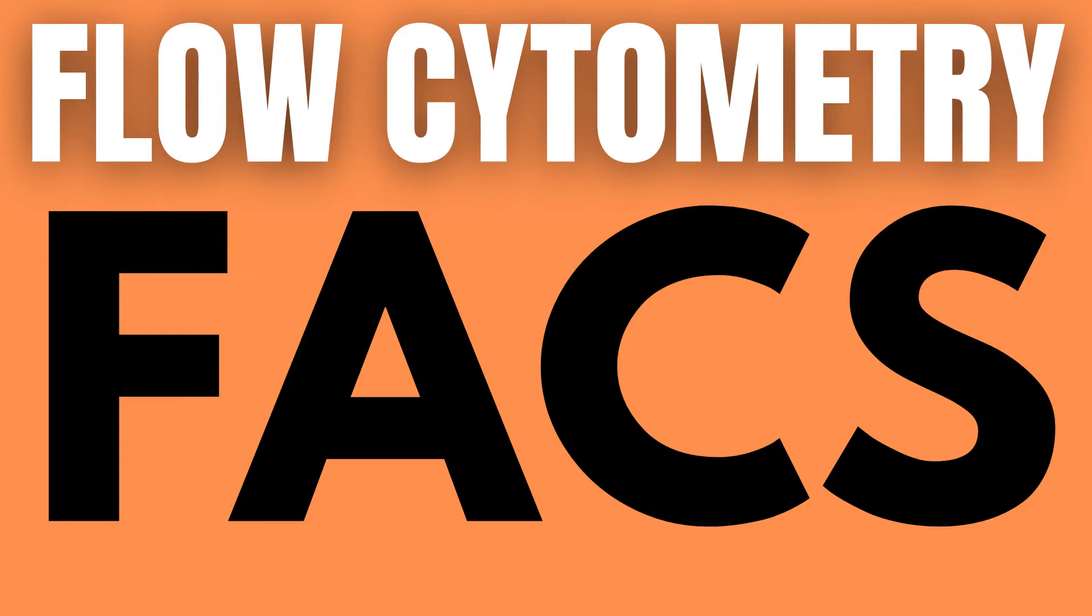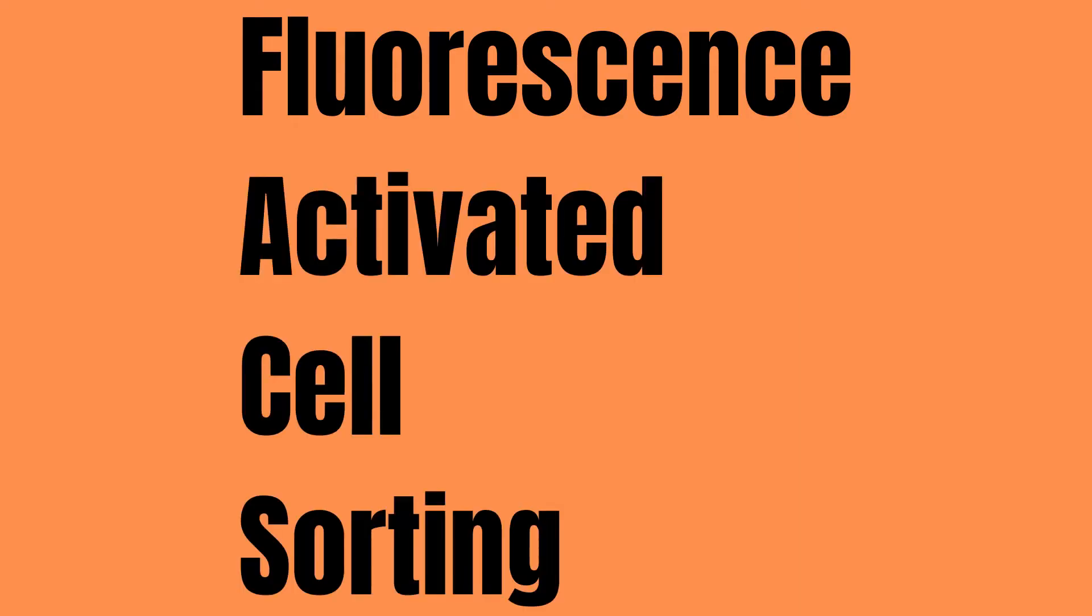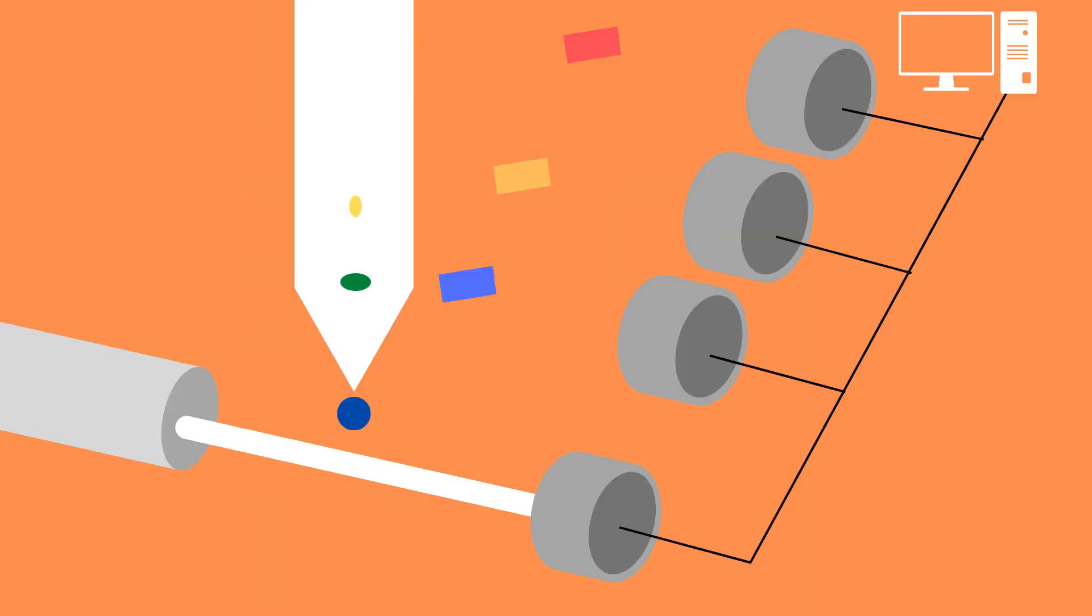In FACS which stands for fluorescence activated cell sorting, naturally occurring fluorophores or fluorophore labeled antibodies which attach to select cells absorb and re-emit light which gets detected by a multitude of detectors in the following manner.